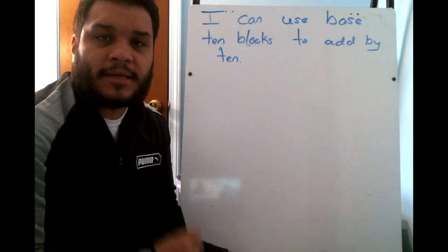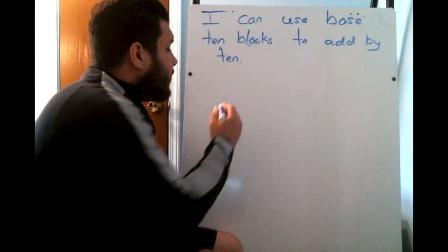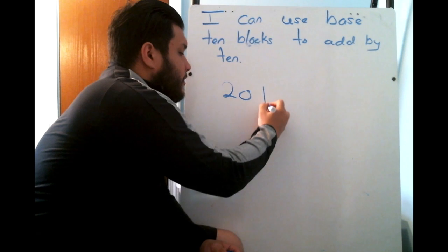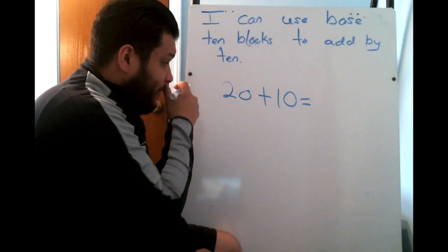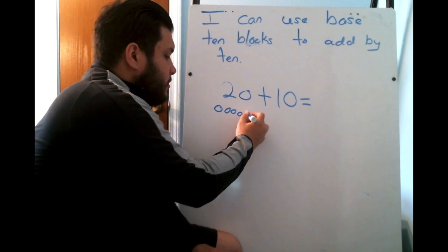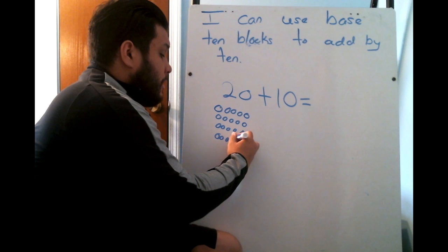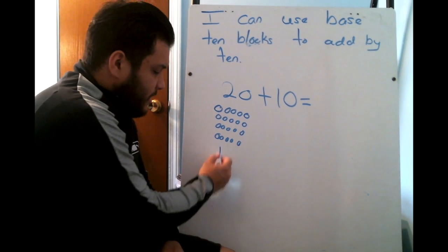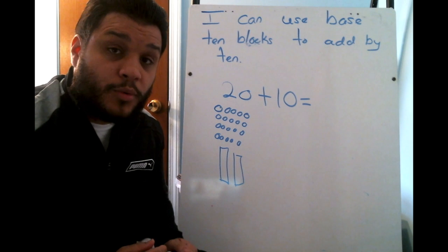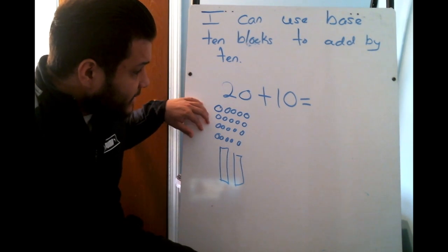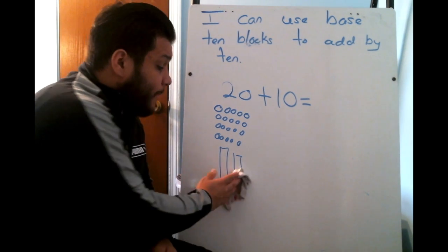How do you think base 10 blocks will help us add by 10s? If I had on the board 20 plus 10, would it be easier to draw counters? Did that seem easier than just doing this? 10? 20? Which one would you prefer to do if you were adding by base 10? Drawing 20 counters out, or just drawing two base 10 blocks? Yes, using the base 10 blocks.